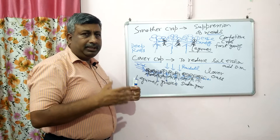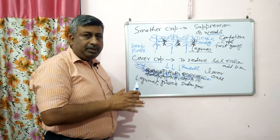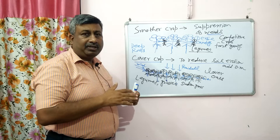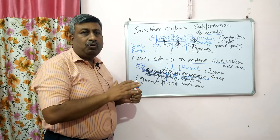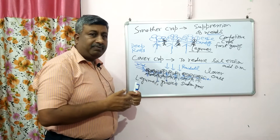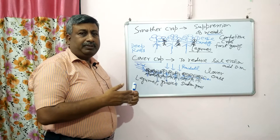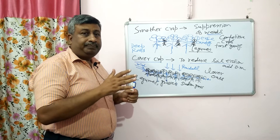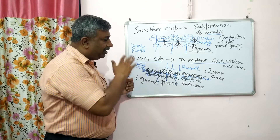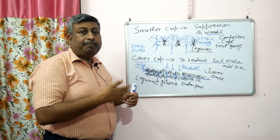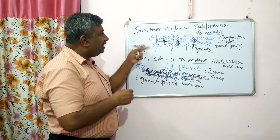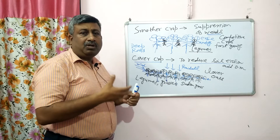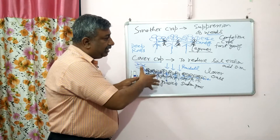Cover crops are generally not grown in the main season because we grow the main crop then. After the main season, when the field is vacant and fallow and open, there is more impact of wind and water. So after the harvest of the main crop, these cover crops are grown. If no commercial crop is being grown, these crops are grown permanently — particularly grasses that also provide fodder. After the harvest of a cash crop or commercial crop, the field remains vacant for one or two months, and during this period soil erosion occurs. So in this period, cover crops can be grown. These cover crops do not provide additional yield or profit — the purpose is only to conserve the soil.